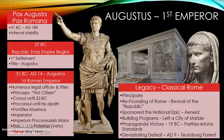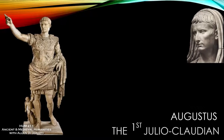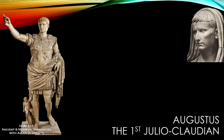Rome is never going to completely conquer the territories of Germania, and that is going to be a continuing problem for Rome especially as we get to the 3rd, 4th, and 5th centuries. But Augustus, as first emperor, has the task of figuring out how to pass his position to his chosen heir — this idea of succession becomes a big problem.